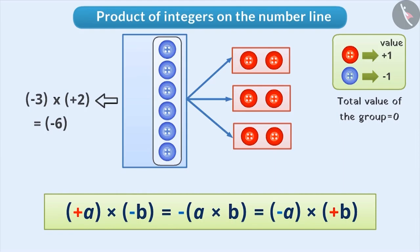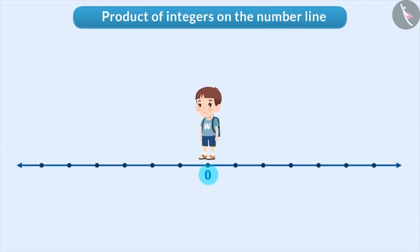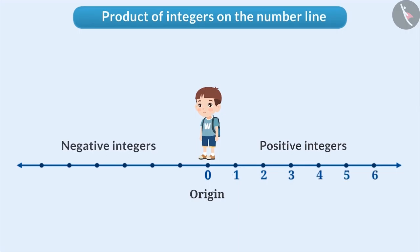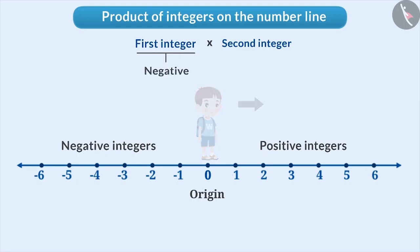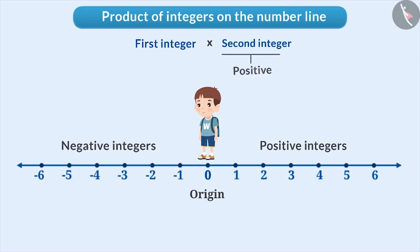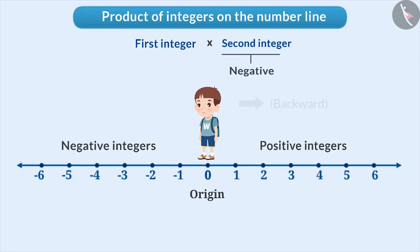Product of integers can also be done on the number line. Suppose a person is standing at point zero, which is considered the origin. Positive integers are related to the right side of the origin and negative integers to the left side. If the first number is positive, the person is looking towards the right direction. If the number is negative, the person is looking to the left direction. If the second number is positive, the person moves in a forward direction, and if it is negative, he moves backwards.